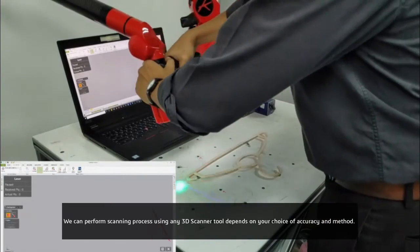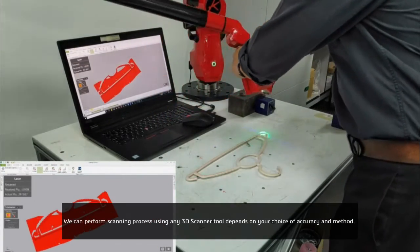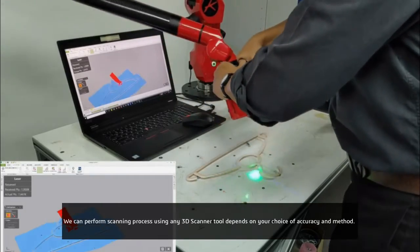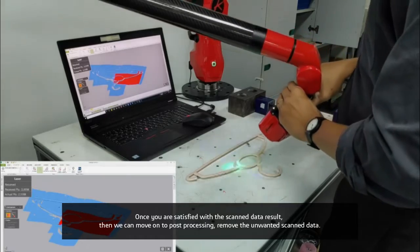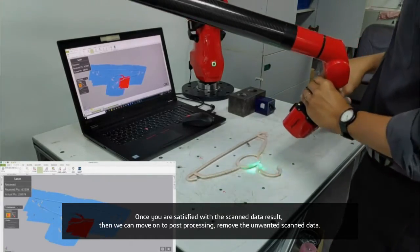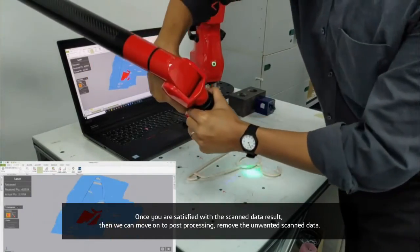We can perform scanning process using any 3D scanner tools depending on your choice of accuracy and methods. In this case, we are using a scanning arm. Once you are satisfied with your scan data result, then we can move on to the post-processing.